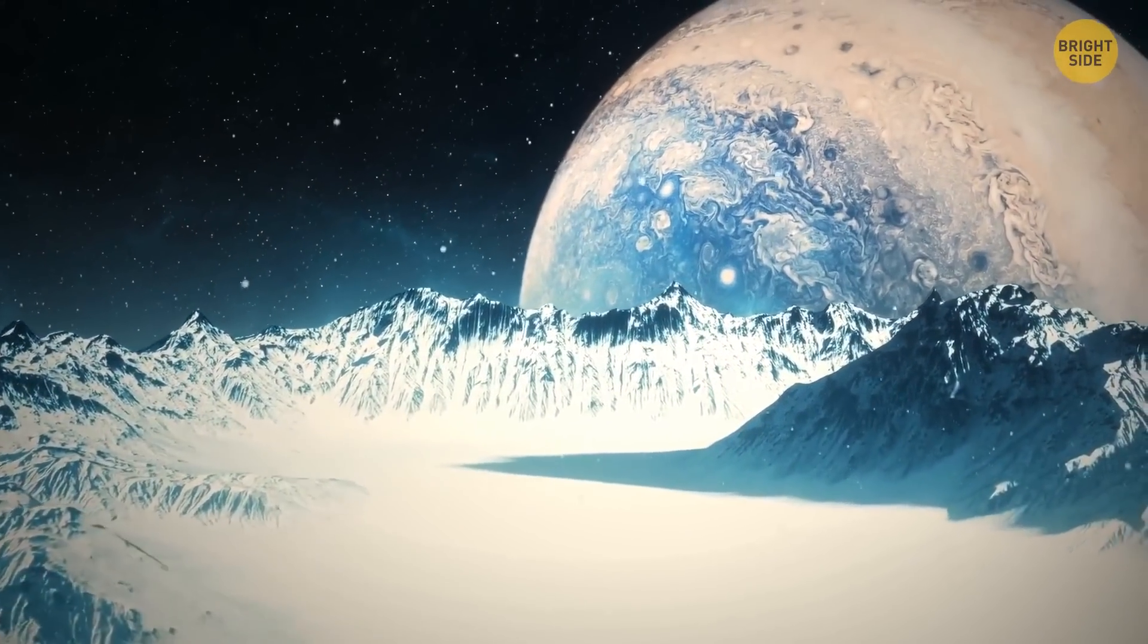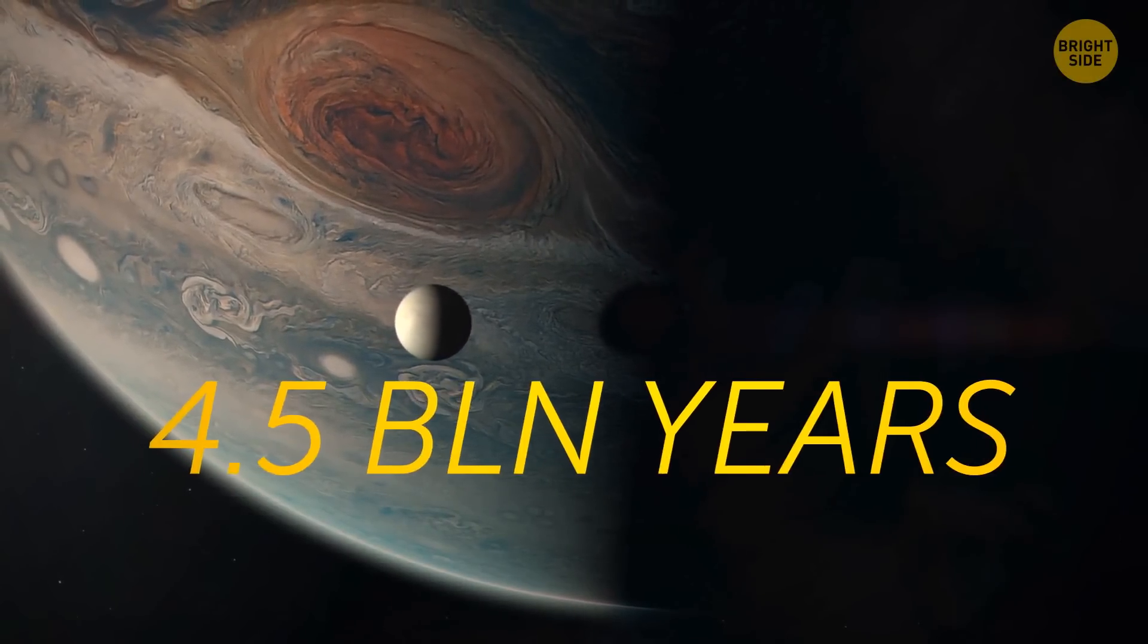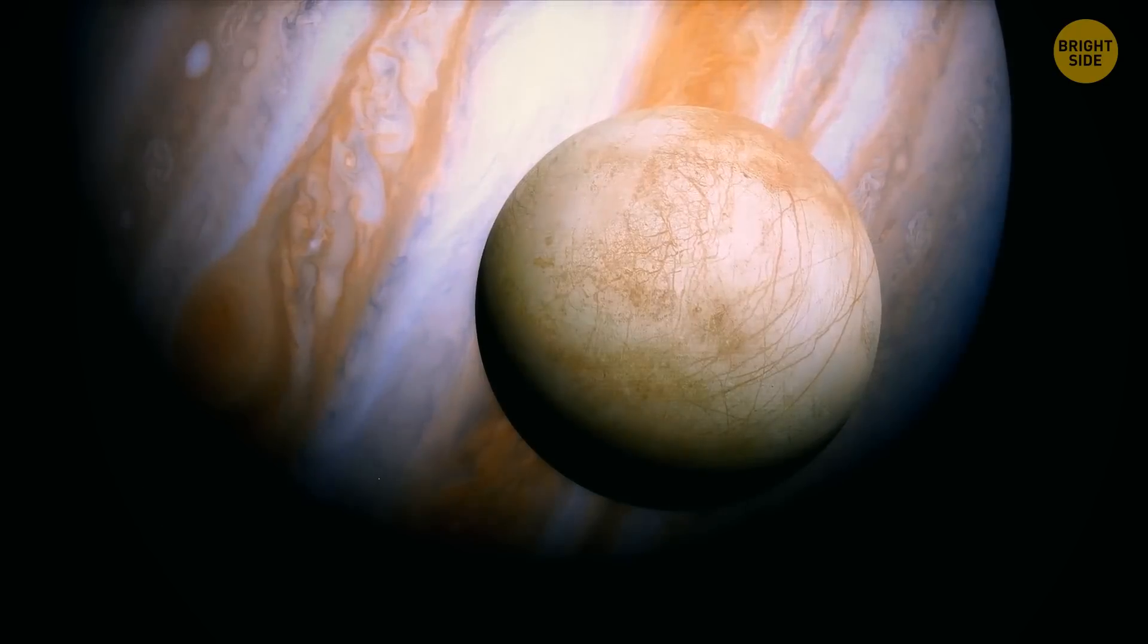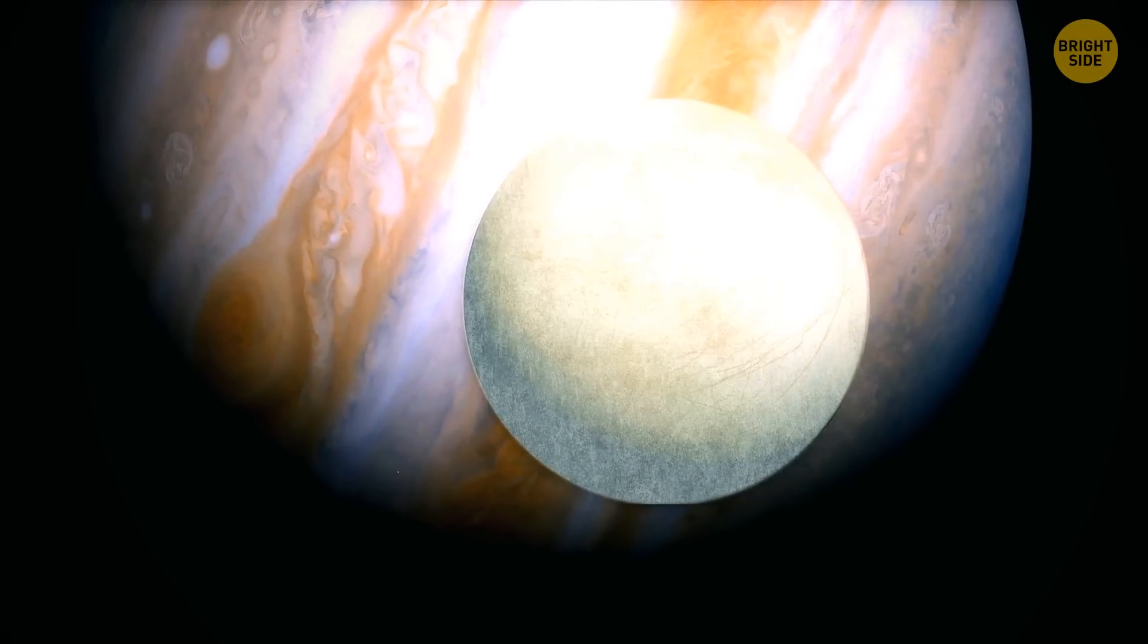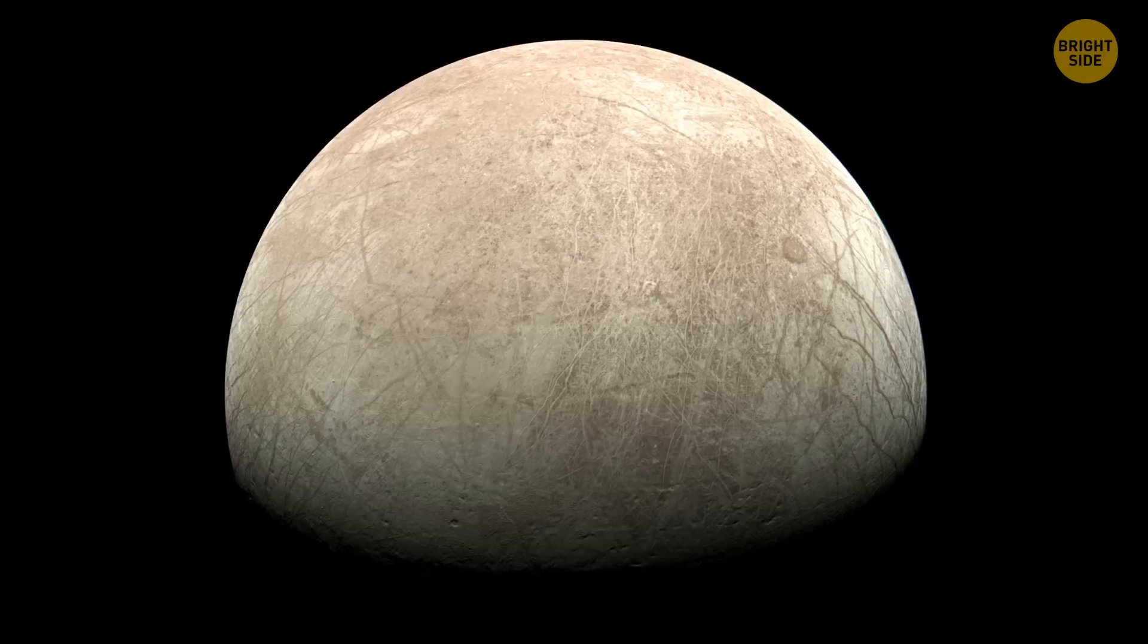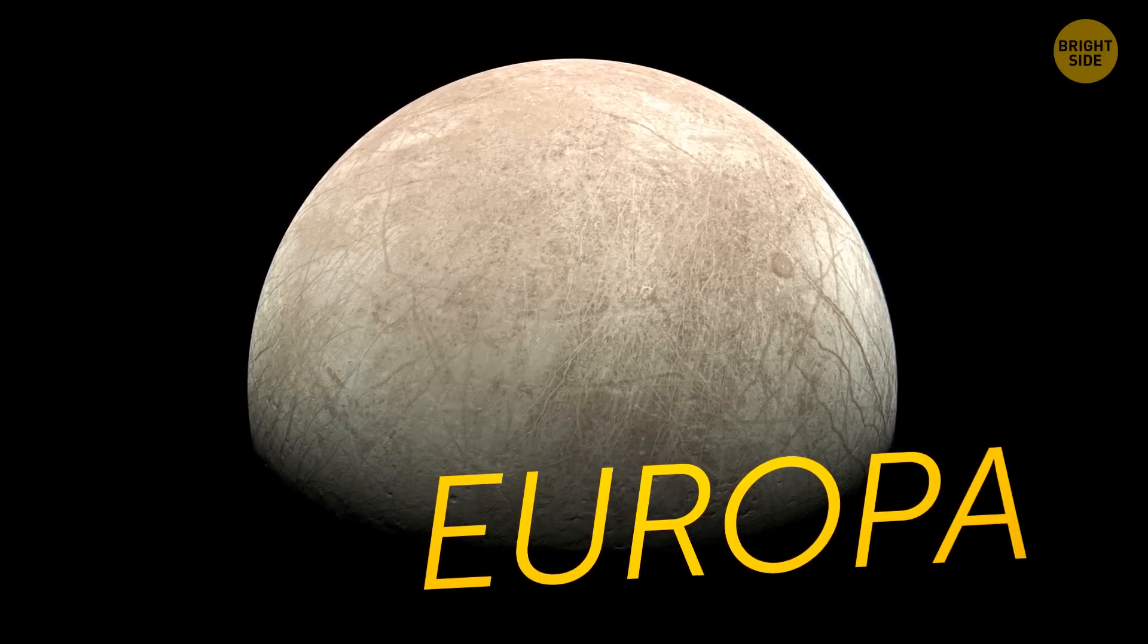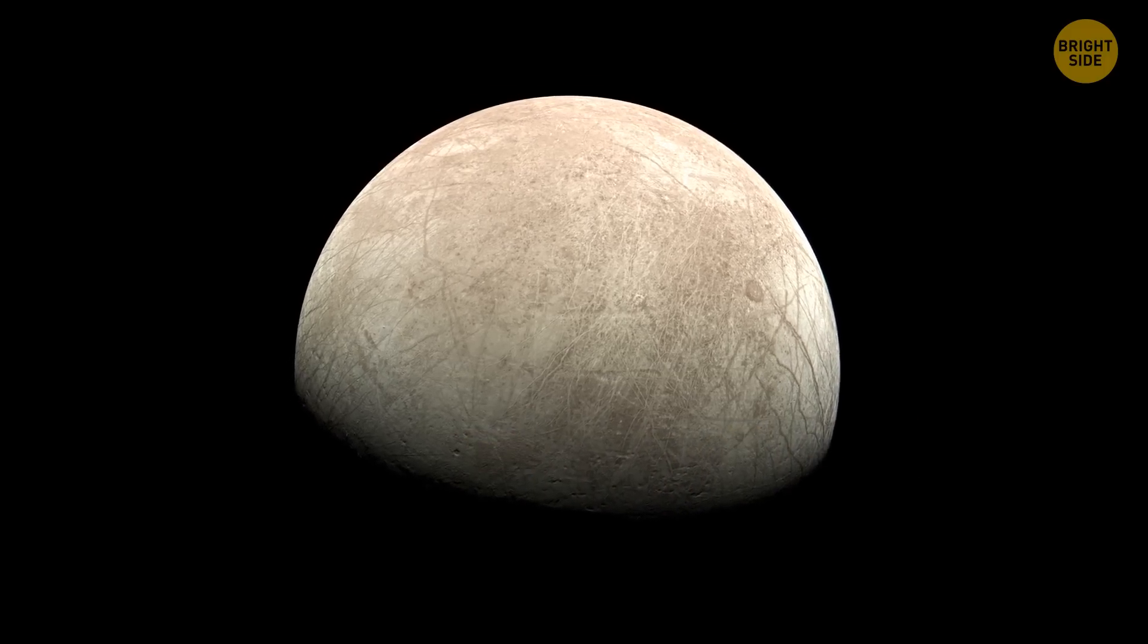Imagine a still, frozen world. It's ancient, about 4.5 billion years old. It's barely heated by the rays of the sun and covered with a thick layer of ice. This world is smaller than our moon, but a bit larger than Pluto. Its name is Europa, the sixth satellite of Jupiter and one of the biggest moons in the solar system.